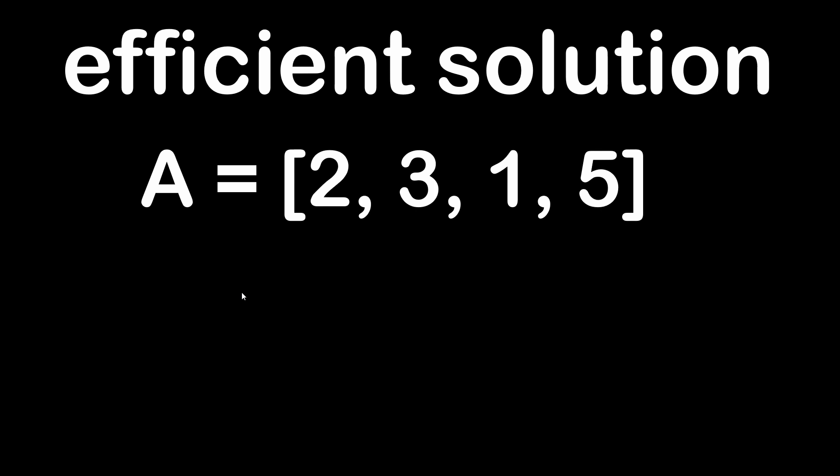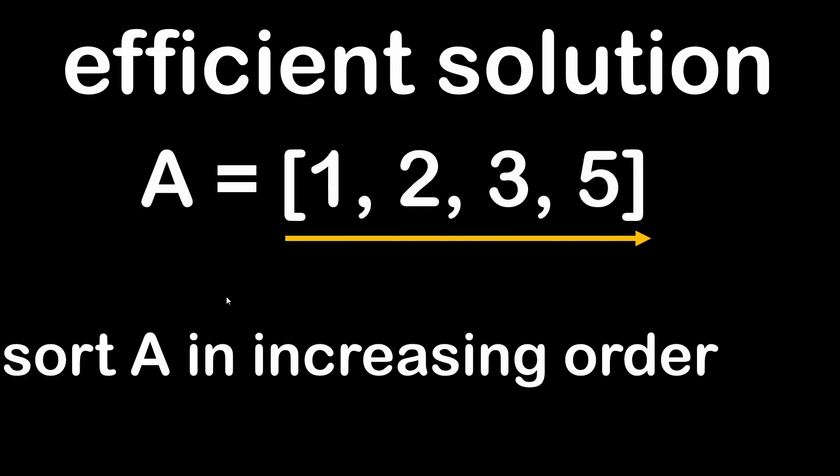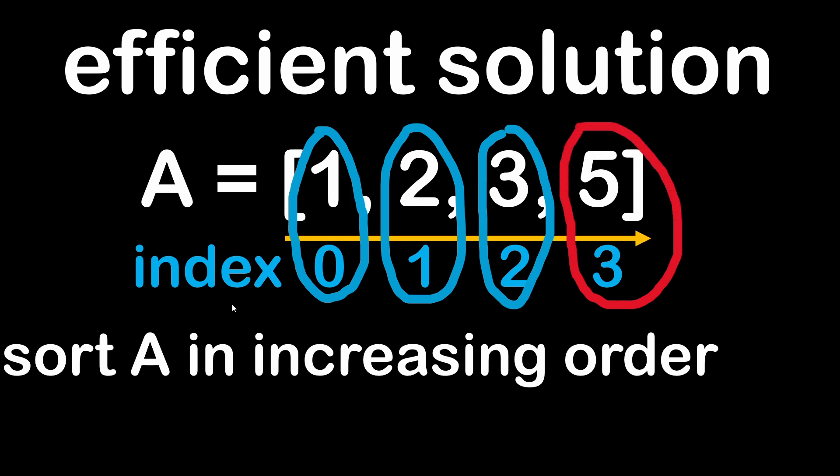First we start by sorting our array in increasing order. Then you notice that the index of each element is somehow related to the value of the element itself. So elements are equal to their index plus 1. For example here, the element 1 is equal to its index 0 plus 1.